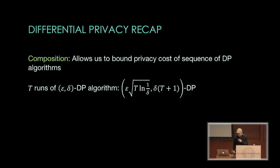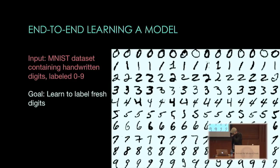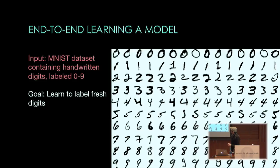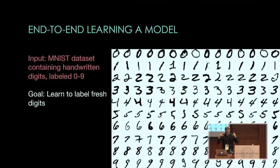Let me start with where we'll end the talk. One of the things we'll be going towards is designing an end-to-end machine learning algorithm for a classification task. I'll be looking at training a classifier to classify images. This is the famous MNIST dataset — a dataset of handwritten digits from Census Bureau employees. The labeled dataset contains about 50,000 images, with about 5,000 zeros, 5,000 ones, and so on. The goal is to look at a 28 by 28 bitmap image and figure out what the digit is.